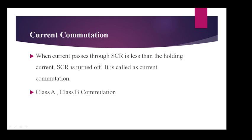The second method is current commutation. When the current passing through the SCR is less than the holding current, the SCR turns off. This is called current commutation. Class A and class B commutation are examples of the second method, current commutation.